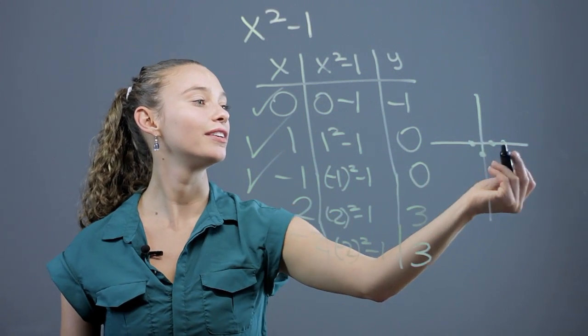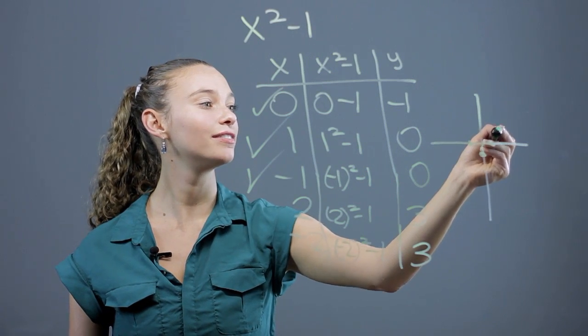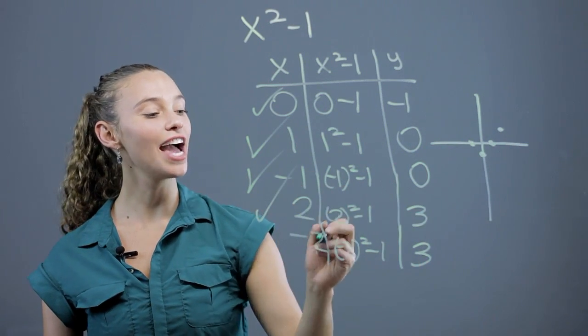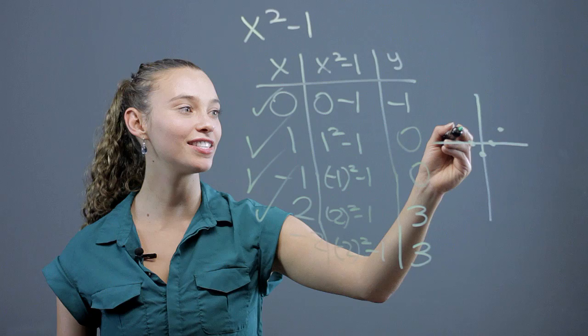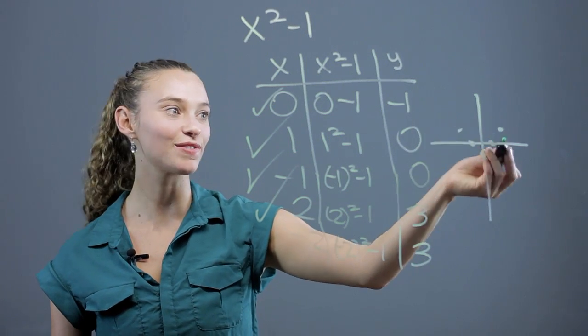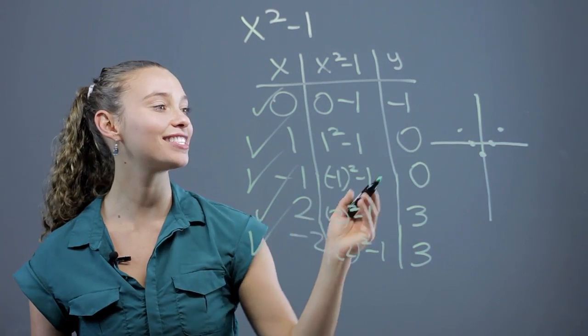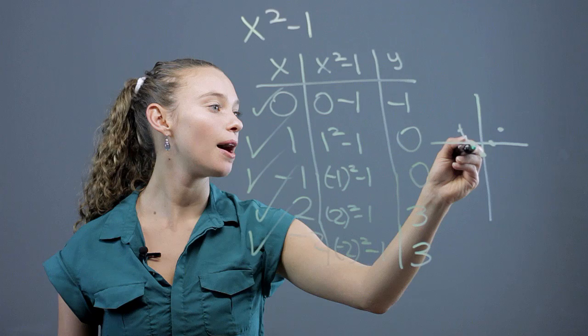2, 3. Go over 2, up 3. Check that off. Negative 2, 3. Again, as you can see, it's going to be a mirror image, right, across the y-axis, which gives us a parabola.